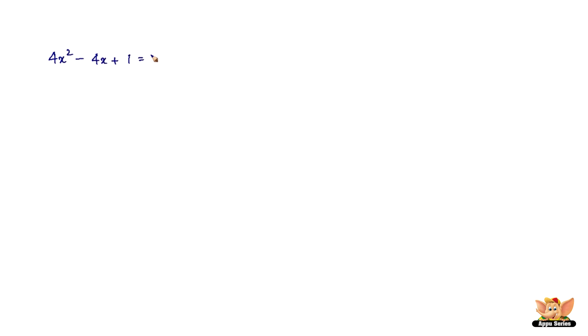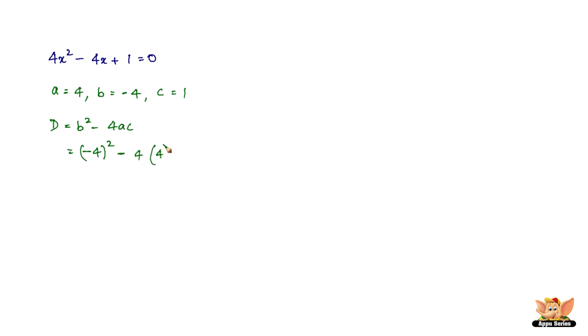We've got the equation 4x squared minus 4x plus 1 equals 0. Here we have a equals 4, b equals negative 4, and c equals 1. So the discriminant equals b squared minus 4ac, which is negative 4 whole squared minus 4 times 4 times 1. Negative 4 squared is 16, and 4 times 4 is 16. So this equals 0.